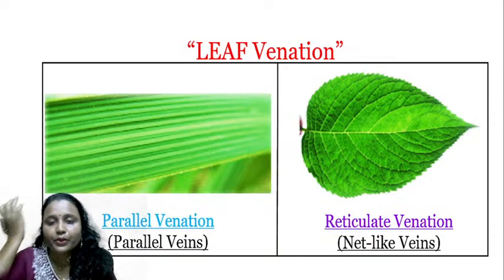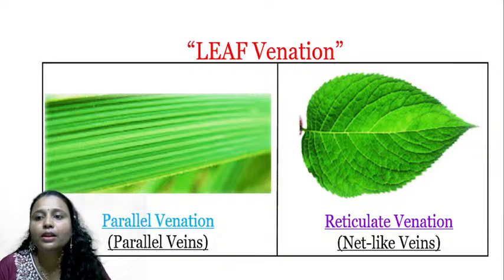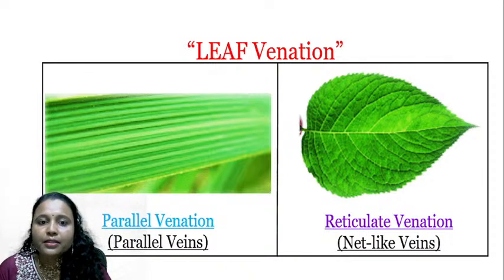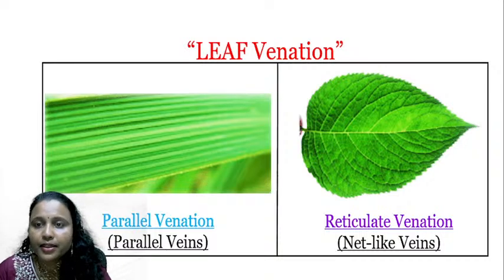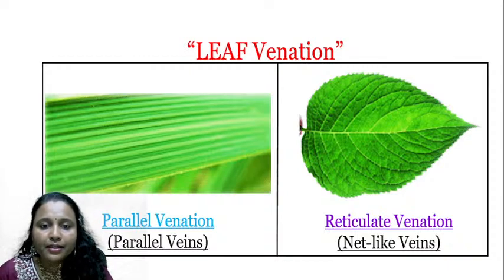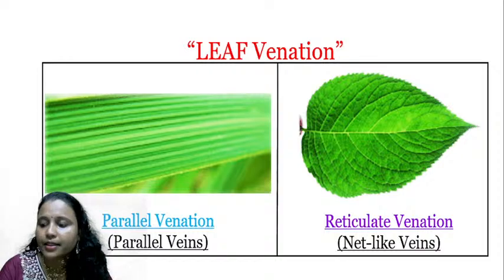Now we go to venation. Venation refers to the veins present along with the midrib, which carry water as well as food and transport them to different parts of the plant. There are two types of venation: parallel venation and reticulate venation. In parallel venation, the lines are not joined to each other — they travel in a straight line, flowing parallel to each other.